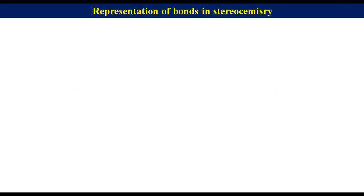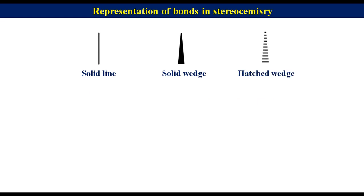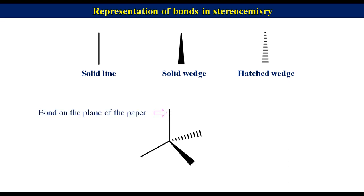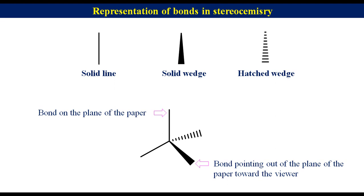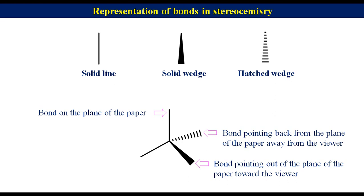I am going to start with the presentation of bonds in stereochemistry. In stereochemistry, bonds are represented by a solid line, a solid wedge, and a hatched wedge. These three representations have different meanings. A solid line represents a bond present on the plane of the paper. A solid wedge represents a bond pointing out of the plane of the paper towards the viewer, and a hatched wedge represents a bond pointing back from the plane of the paper away from the viewer.